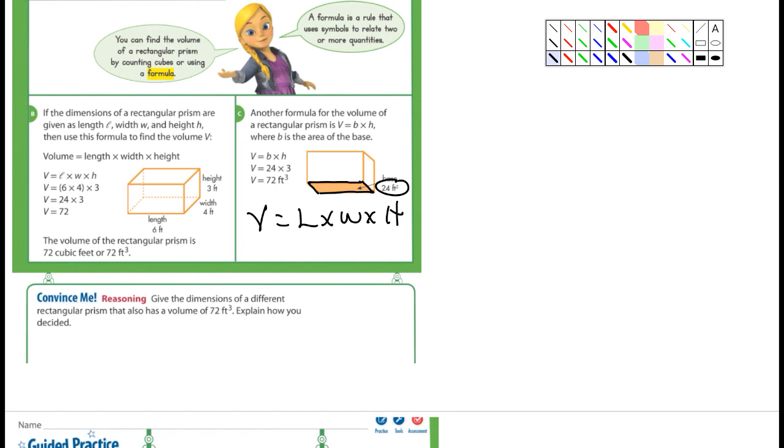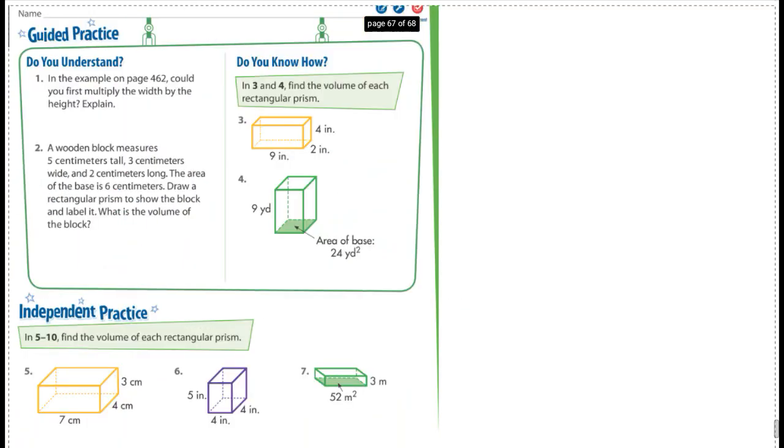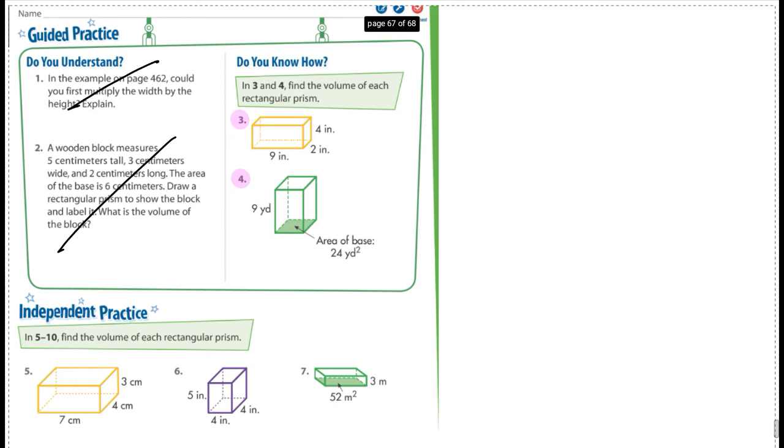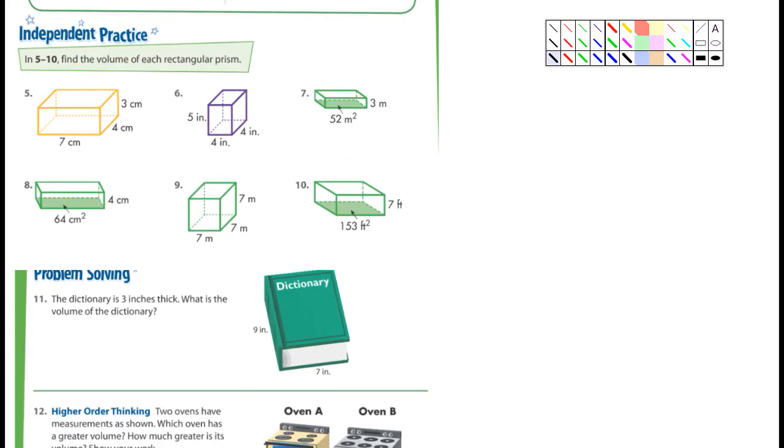I'm not worried about the convince me. Draw a line through that. Let's move down. All right. Guided practice. Not worried about number one. Not worried about number two. So three and four you can do. They're just asking you to find the volume. Do three and four. Well, what's the formula for volume, Mr. Coggin? No, what's the formula for volume? Volume equals what? Times. Times. All right. So does that answer your question? Yep. You just multiply them together.